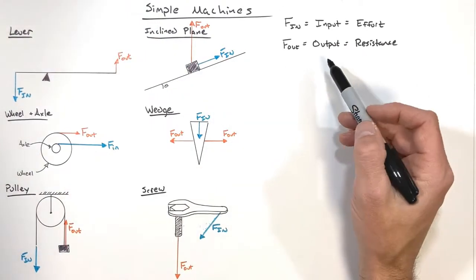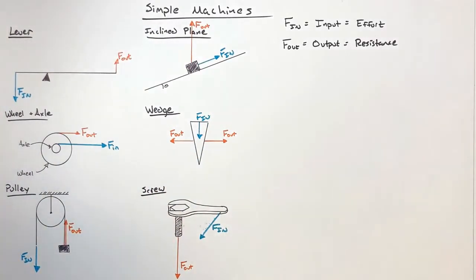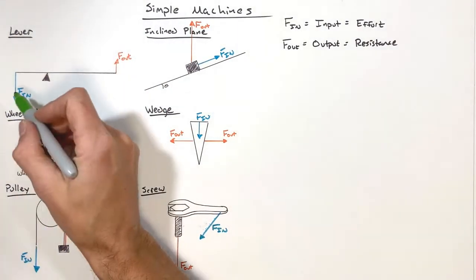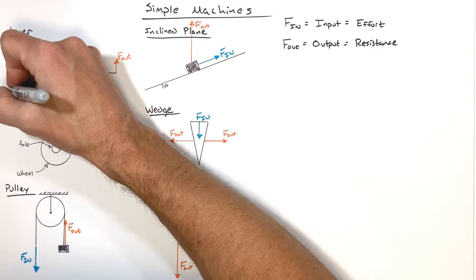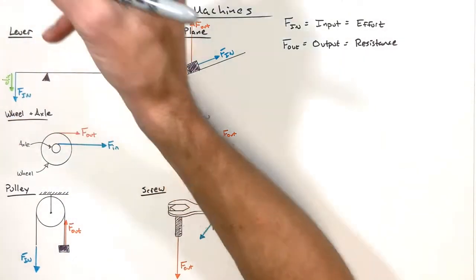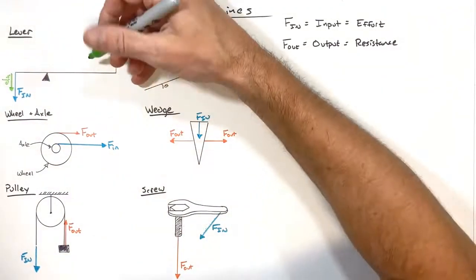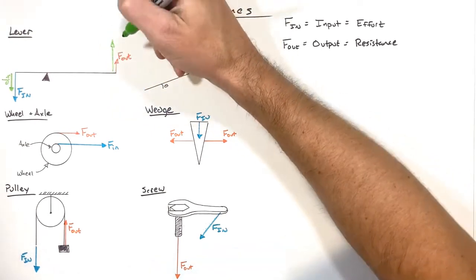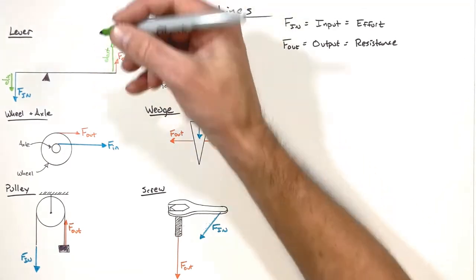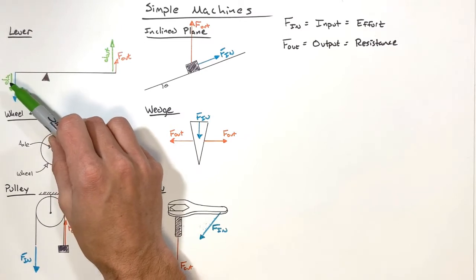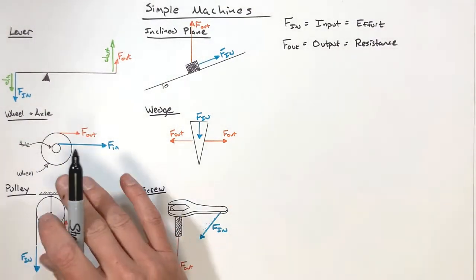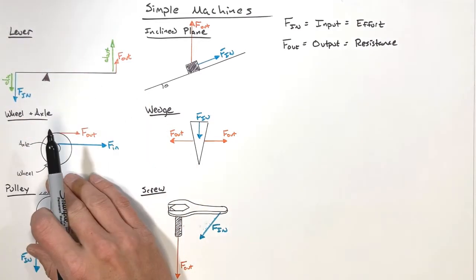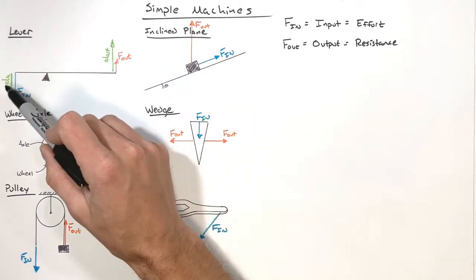I want to look at the lever specifically to understand what simple machines do. When we push on one side of the lever, it rotates a little bit. As a result, the left side moves through some displacement — I'll call this D-in. And if this lever rotates around the fulcrum, this pivot point, we're going to see a displacement over here called D-out.